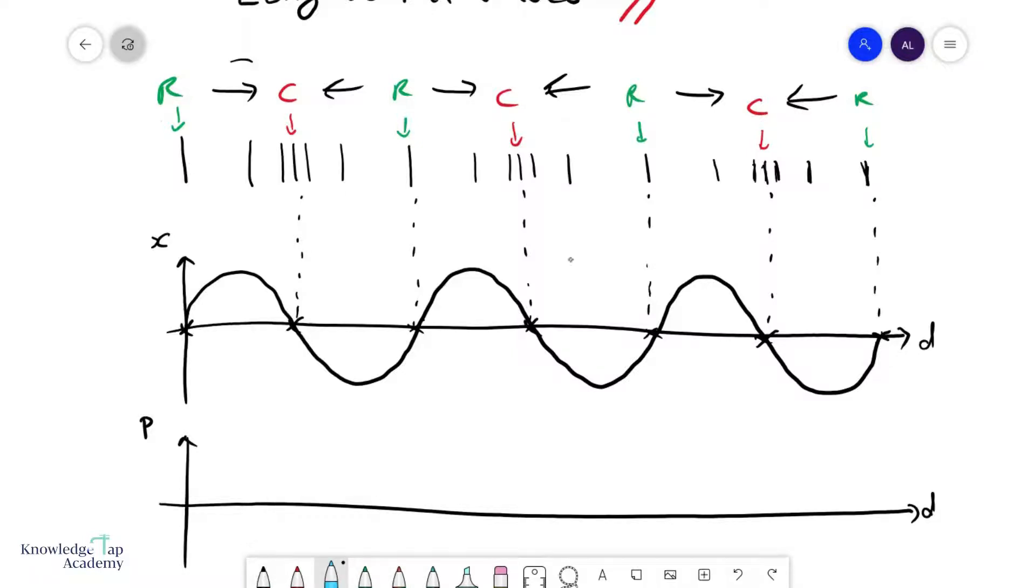We can also see that this is of course one wavelength over here. For a longitudinal wave, remember a wavelength is the distance between any two adjacent rarefactions or, for that matter, compressions. That would work as well.